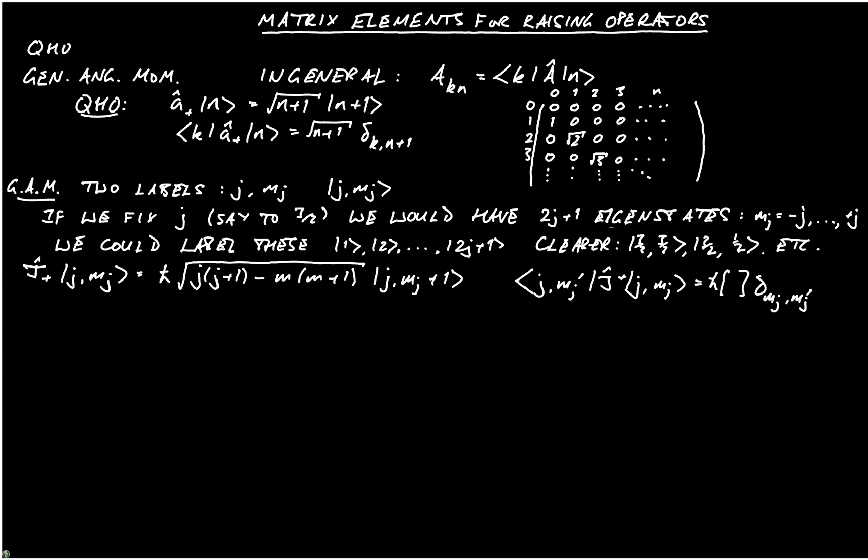Delta mj mj prime. No, that's wrong. Let me just rub that out. What we actually want is delta mj prime comma mj plus 1.